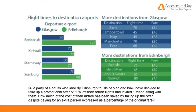What we are being asked here is the cost difference between two scenarios. The first is four adults flying from Edinburgh to the Isle of Man and back. The second is five adults flying from Edinburgh to the Isle of Man and back, with an 80% reduction on the return fare only.